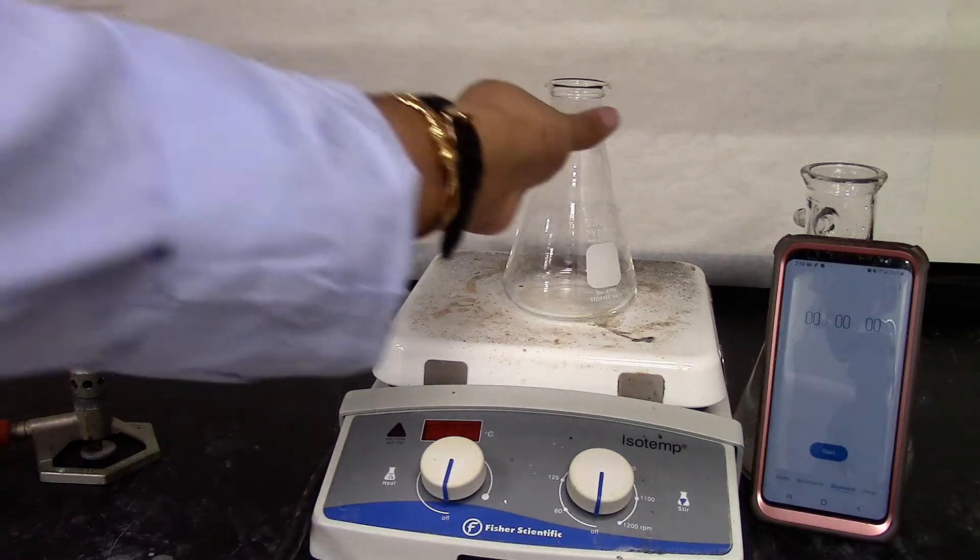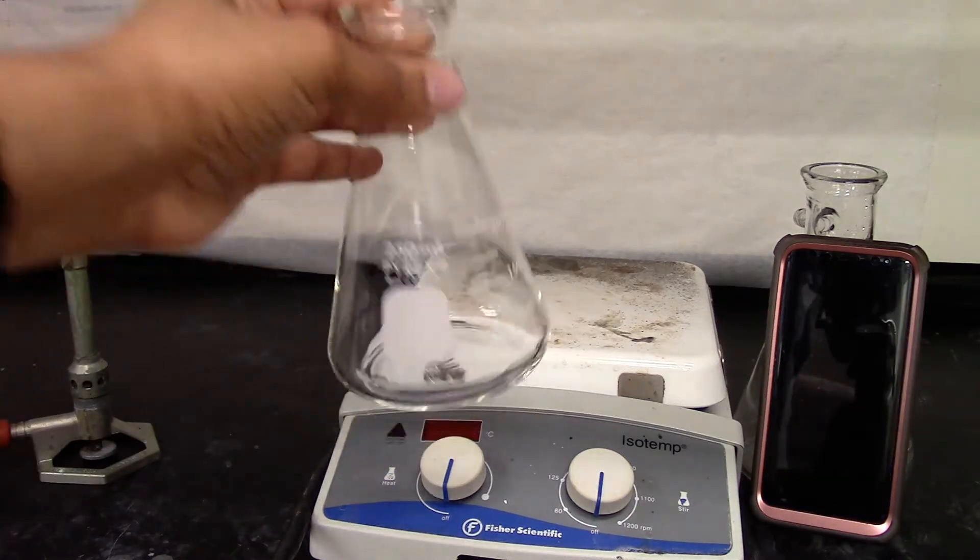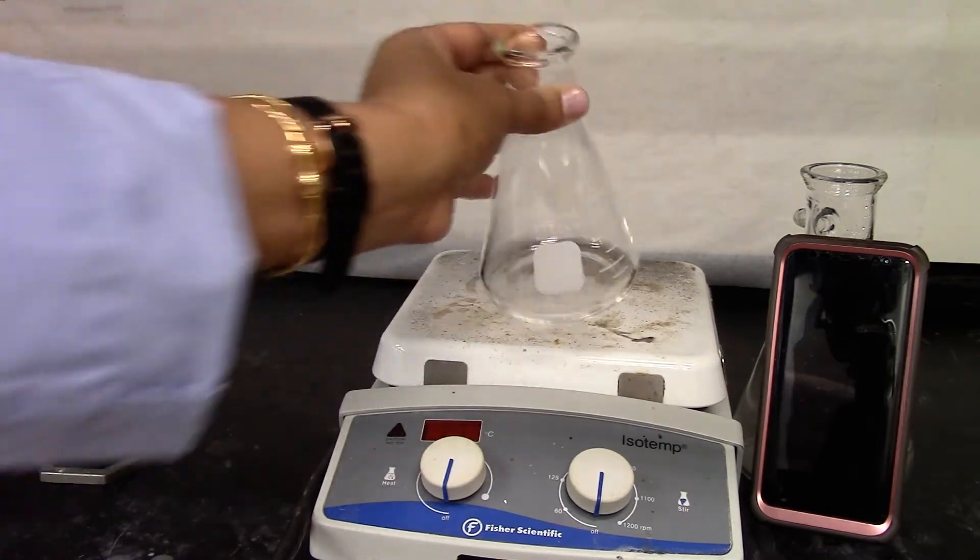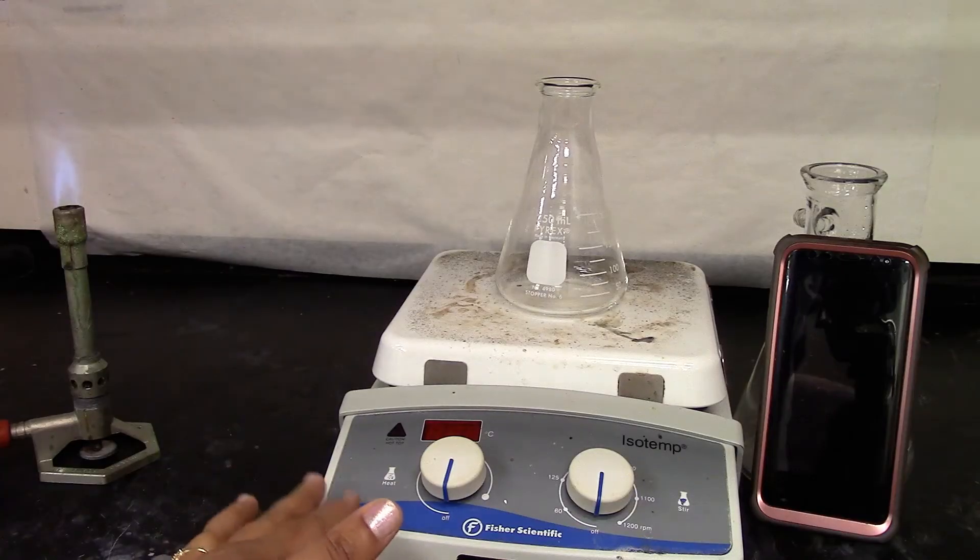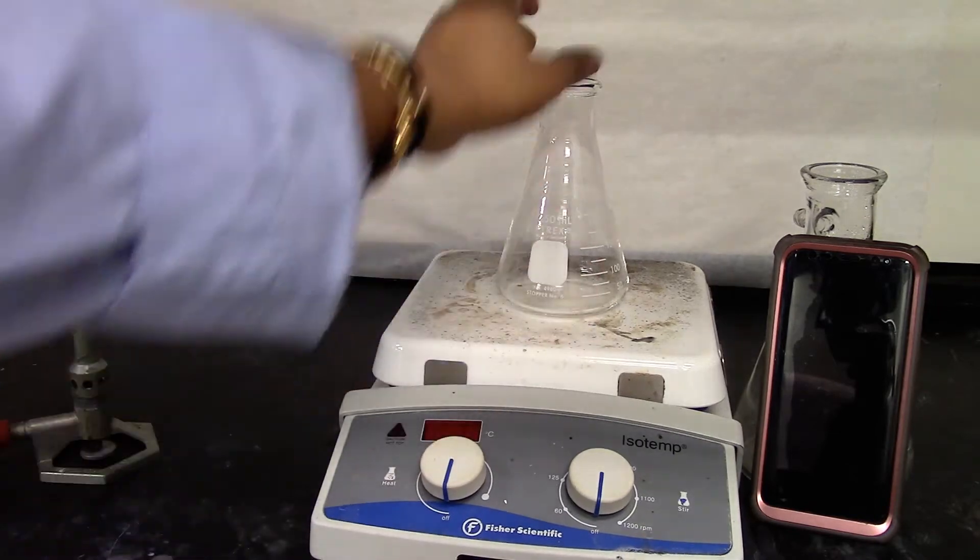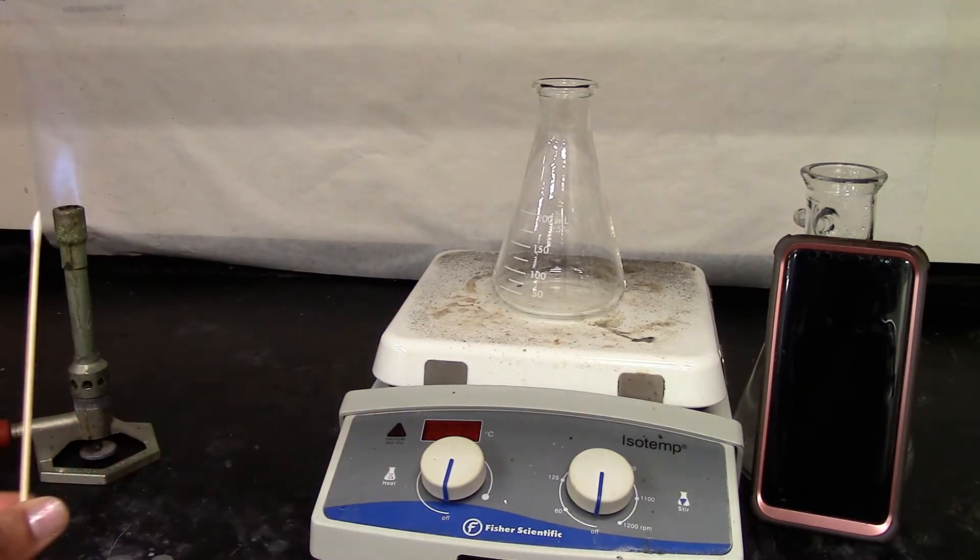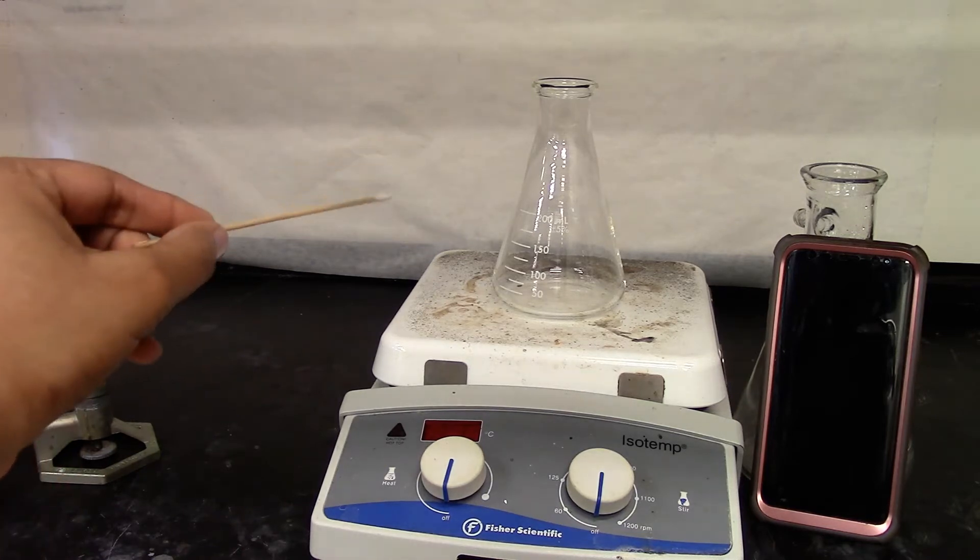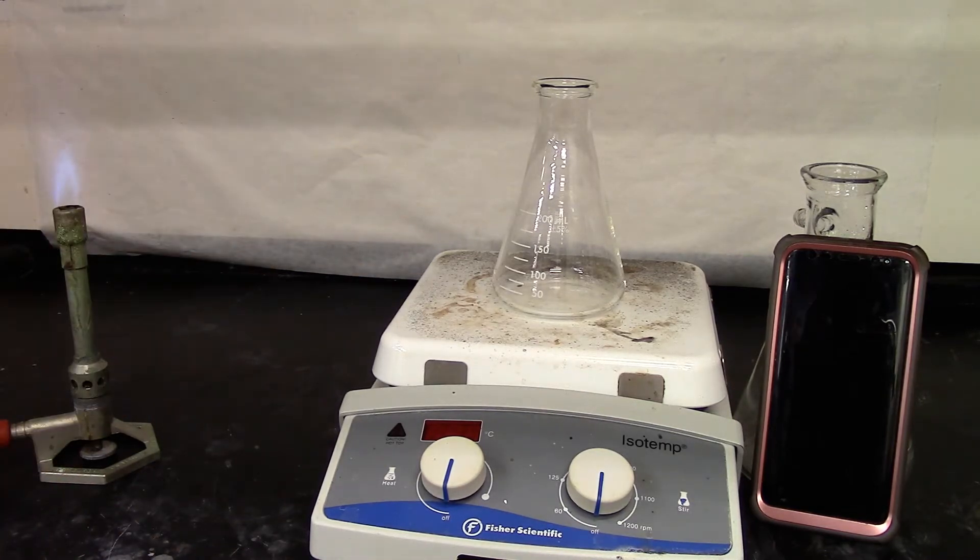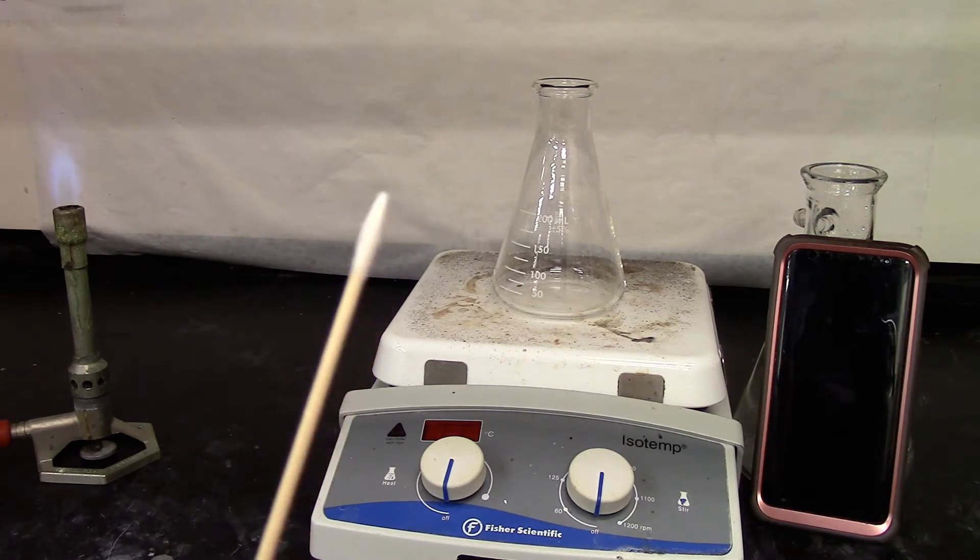So here is a 250 milliliter Erlenmeyer flask. It's clean and dry. The hot plate is not on. At the top it has room temperature. So I placed it on top and I have a splint. I'm going to burn it in the burner and place it inside the Erlenmeyer flask. We're going to see how long it takes for the splint to burn off.